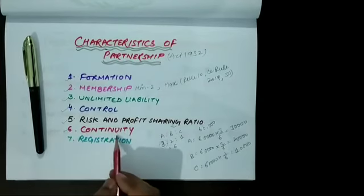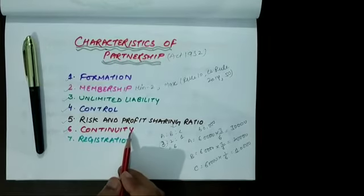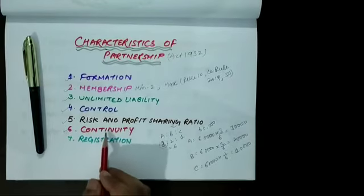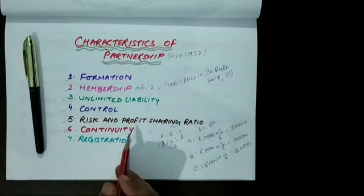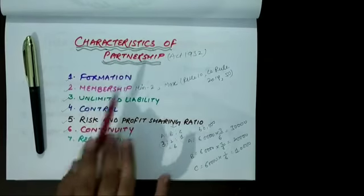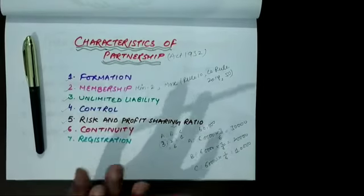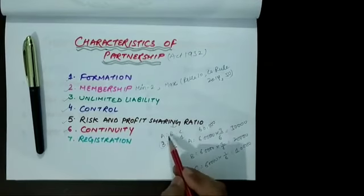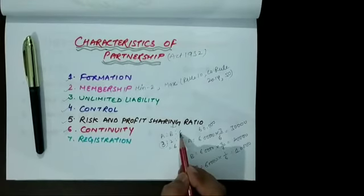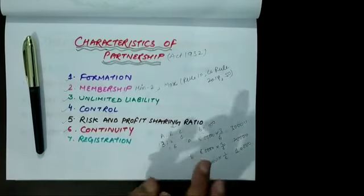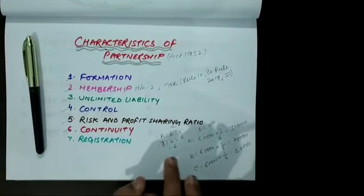The next one is continuity. The partnership comes to an end with the retirement, death, or insolvency of any partner. Suppose any partner retires or any partner dies, then the partnership agreement or partnership ends. If ABC were partners and A dies, leaving B and C, then the partnership ends. But if B and C want to continue the business, they have to make a new partnership agreement.